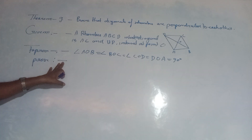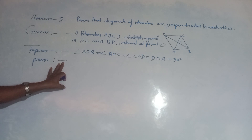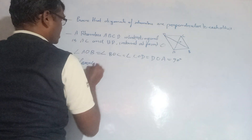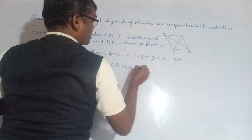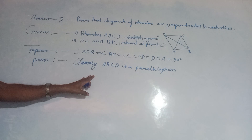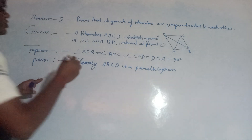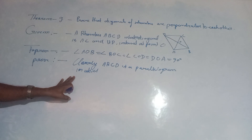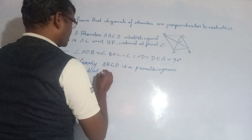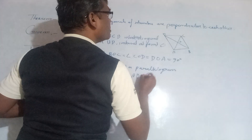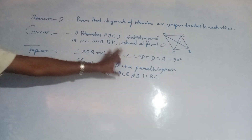Proof: Clearly, ABCD is a parallelogram, in which AB is parallel to DC and AD is parallel to BC. As a parallelogram, we will discuss the properties here.